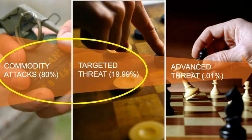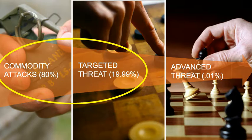Generally, we classify the attacks the bad guys use into three types: commodity attacks, targeted attacks, and advanced persistent threats. The most prevalent, by far, commodity makes up around 80% of all reported attacks. Hackers take a very simple, easy-to-utilize and widely available tool and go after a very large range of systems across the Internet. These systems usually come from multiple organizations, and they are looking for easy access or known vulnerabilities. They don't target your individual organization, but instead are looking to create havoc using tools such as DDoS — dynamic denial of service — and other methods.